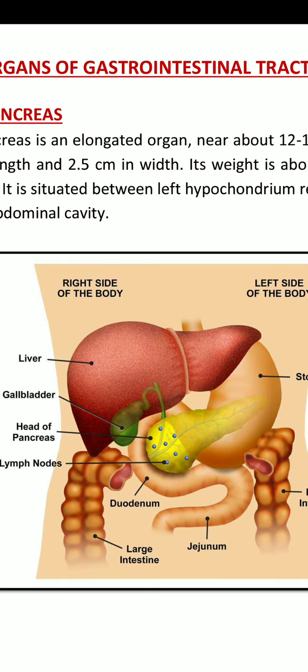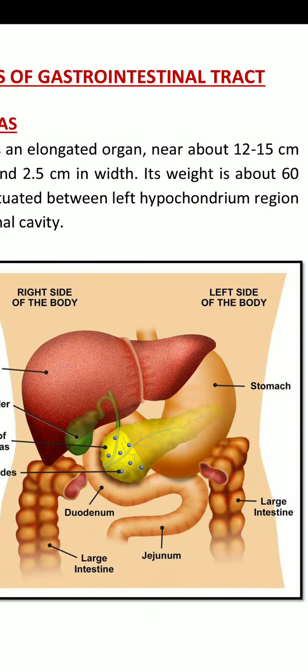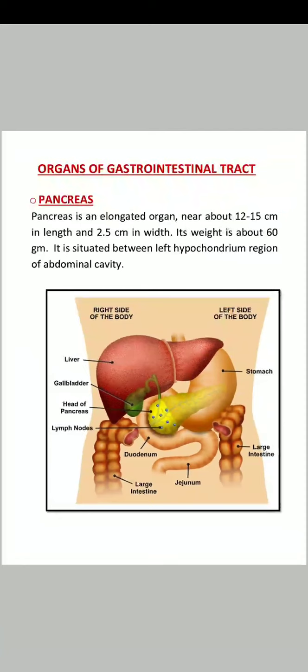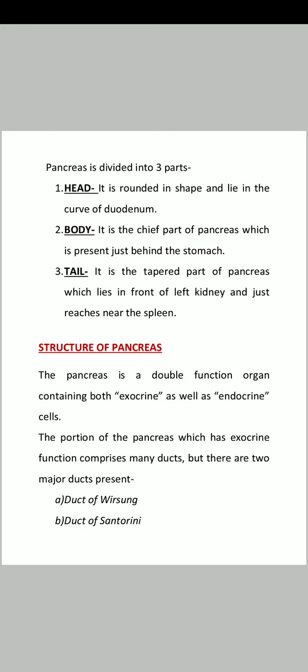The head is the rounded organ present in the curve of the duodenum, that is the first part of the small intestine. After that, our body — the body of pancreas. Where the head finishes, a little bit further, the body of pancreas is present. The body is the chief part of pancreas which is present just behind the stomach. Third one is tail — it is the tapered part of pancreas which lies in front of the left kidney and just reaches near the spleen.